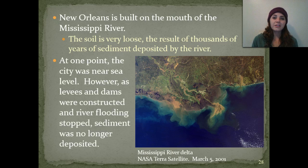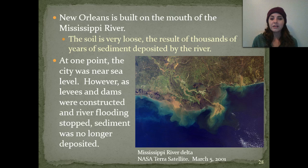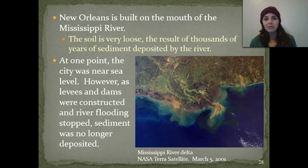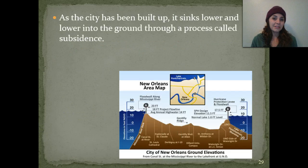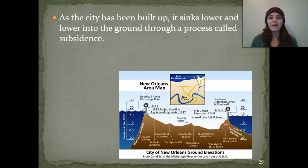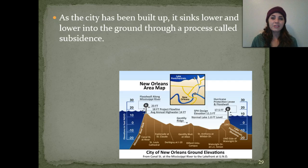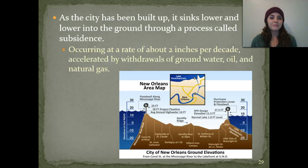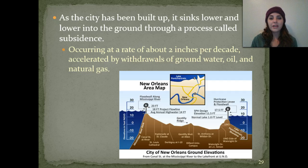At one point, the city was actually near sea level. However, as levees and dams were constructed, the river flooding stopped and the sediment was no longer deposited. We've realized now that this has actually caused the city of New Orleans to start to sink — a process called subsidence. It occurs at a rate of about 2 inches per decade, and it's accelerated by withdrawals of groundwater, oil, as well as natural gas.